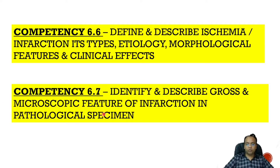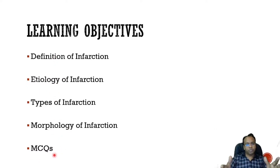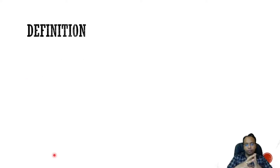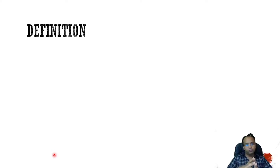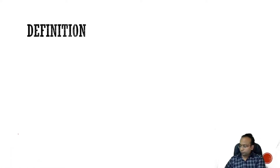In competency 6.7, it includes identifying and describing the gross and microscopic features of infarction in pathological specimens. The learning objectives for today's topic are: to understand the definition of infarction, then etiology, then types of infarct, morphology, and we will see MCQs at the end of our lecture.